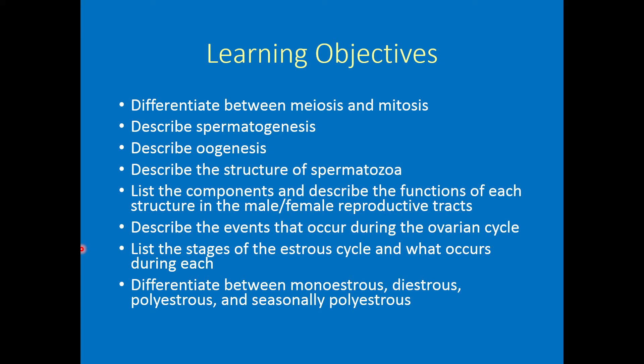Per usual, here are your learning objectives for this chapter. A little bit about mitosis, meiosis, and chromosomes at the start — hopefully some review. Describing spermatogenesis, oogenesis, structures of our spermatozoa, and so on. I'm going to have a little more information on spermatogenesis than is in your book, pulling from the reproduction book and a past lecture. We'll also talk about ovarian estrous cycles and quickly touch on some species that have different types of estrous cycles.